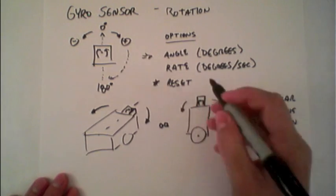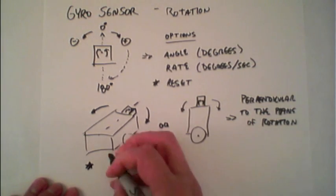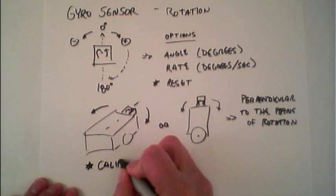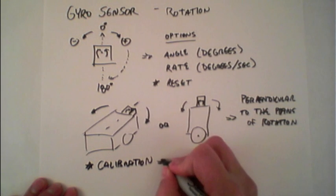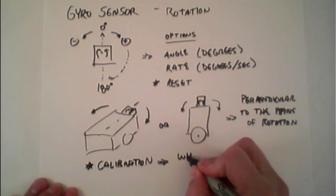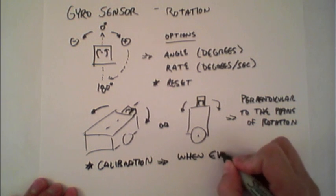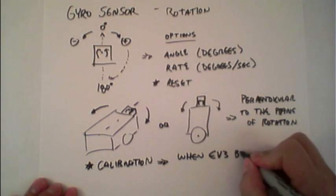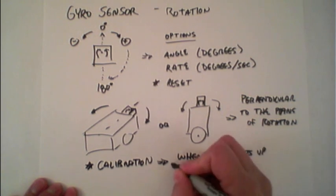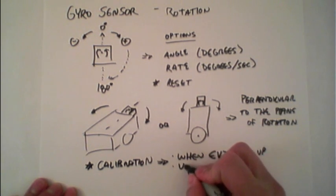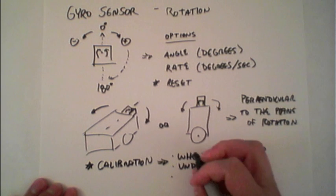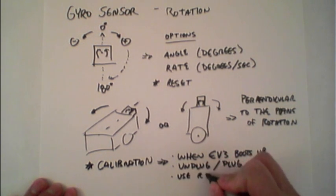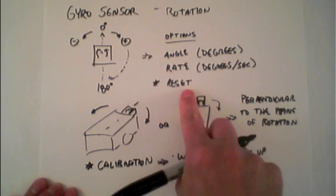So it's important to note that it does need to be calibrated. This happens in a few different ways. One is when the EV3 turns on, so when it boots up. The second is if you unplug or plug in the gyro sensor. And the third is that you can actually use the reset in your code, as specified up here.